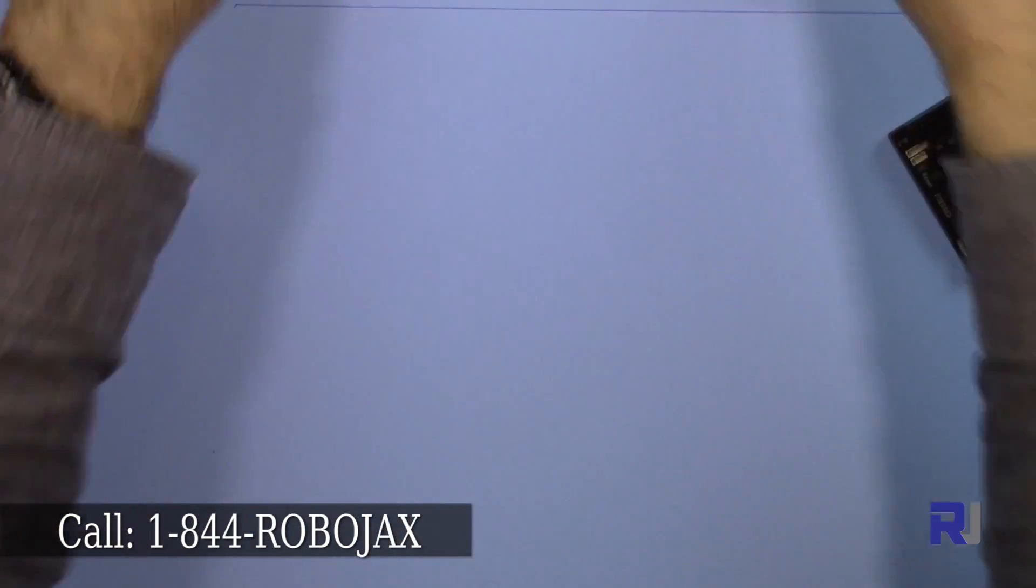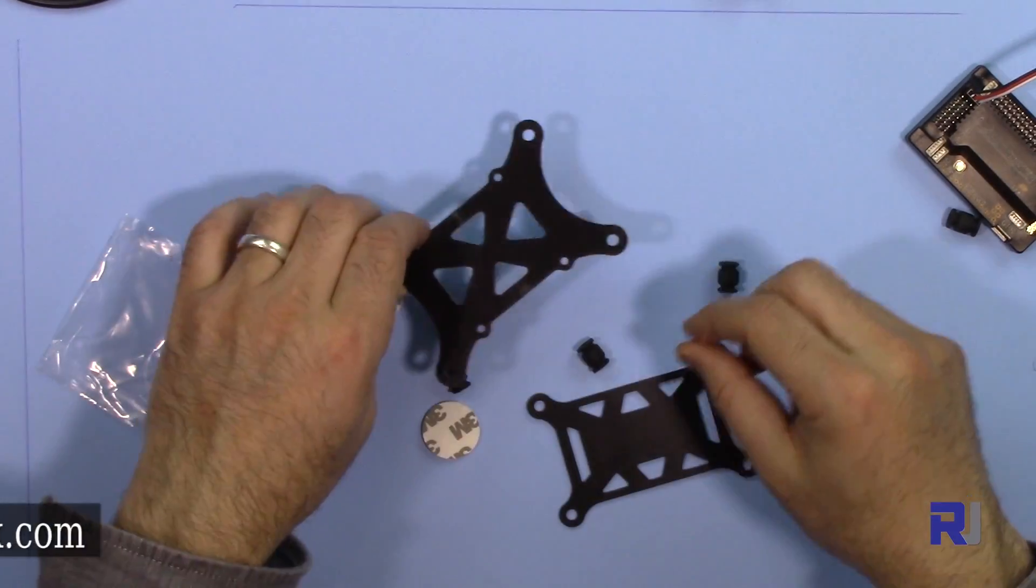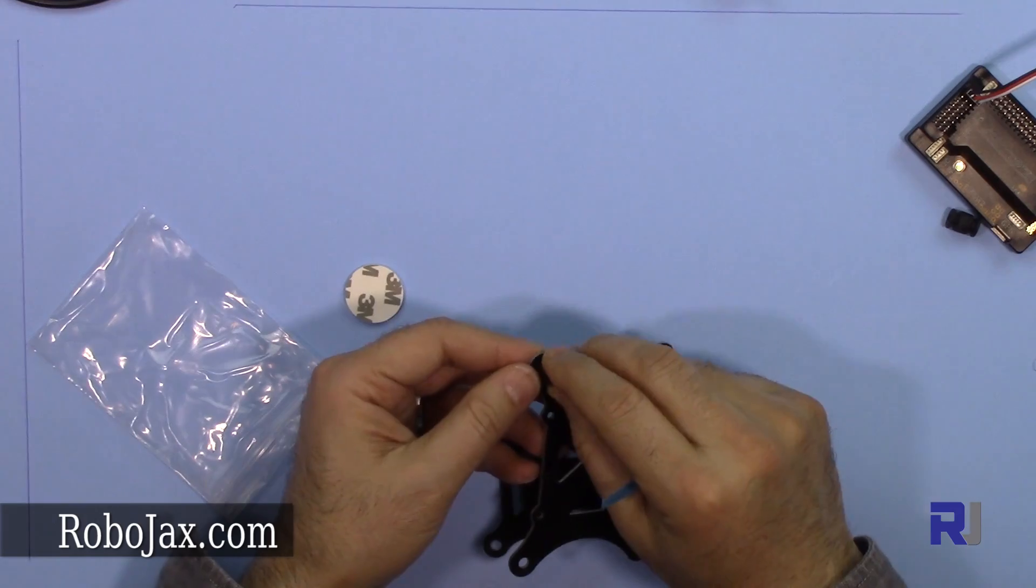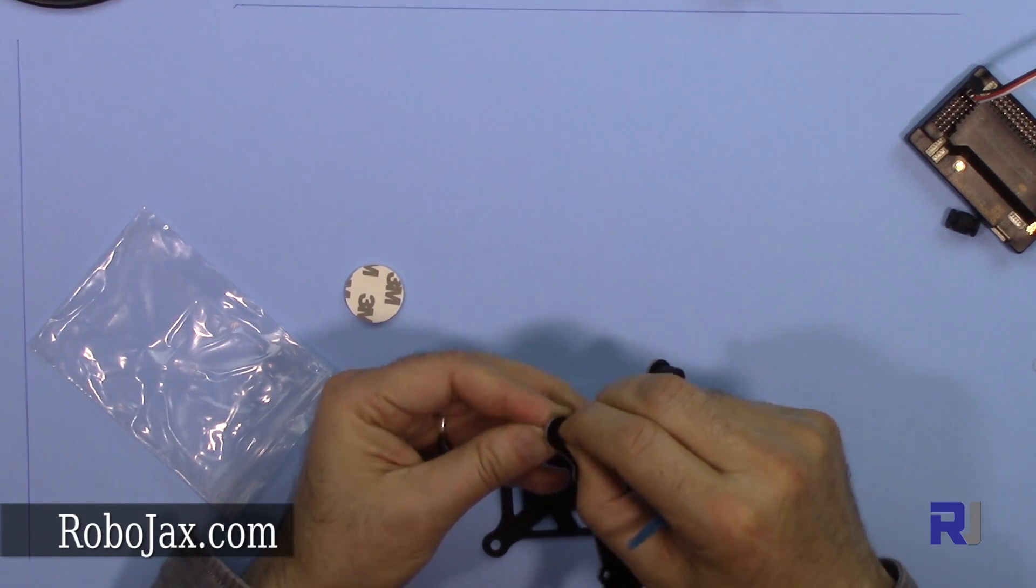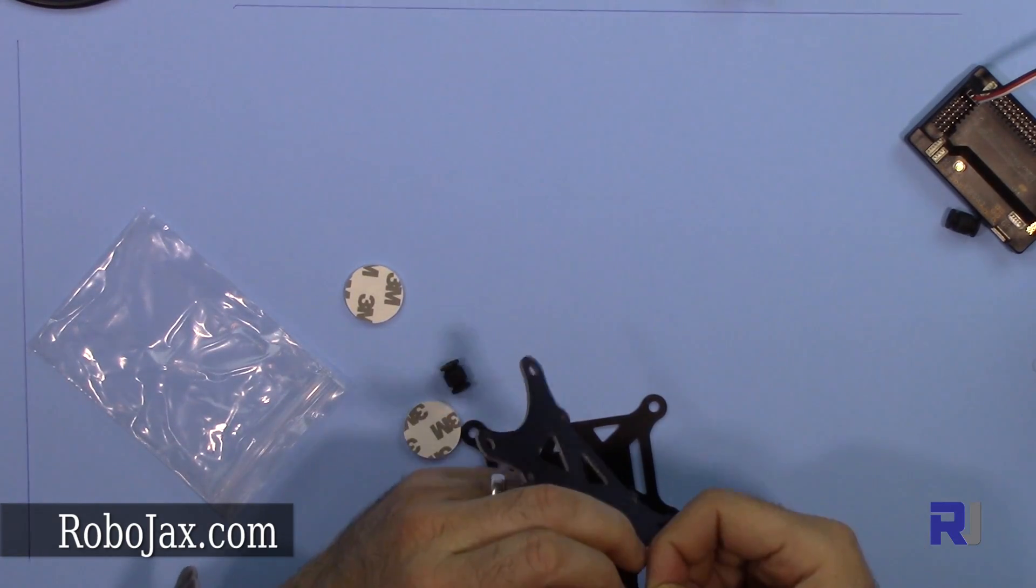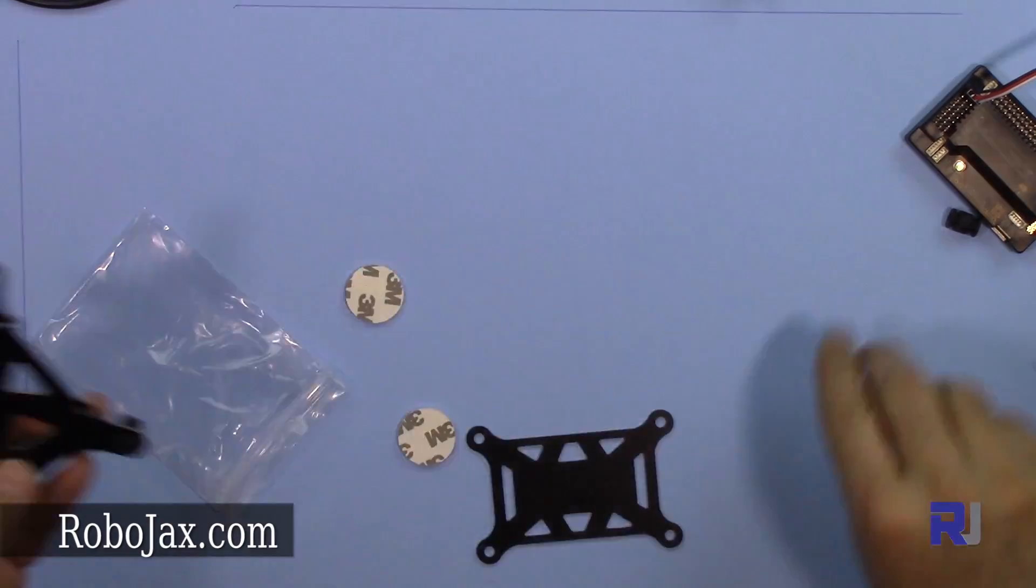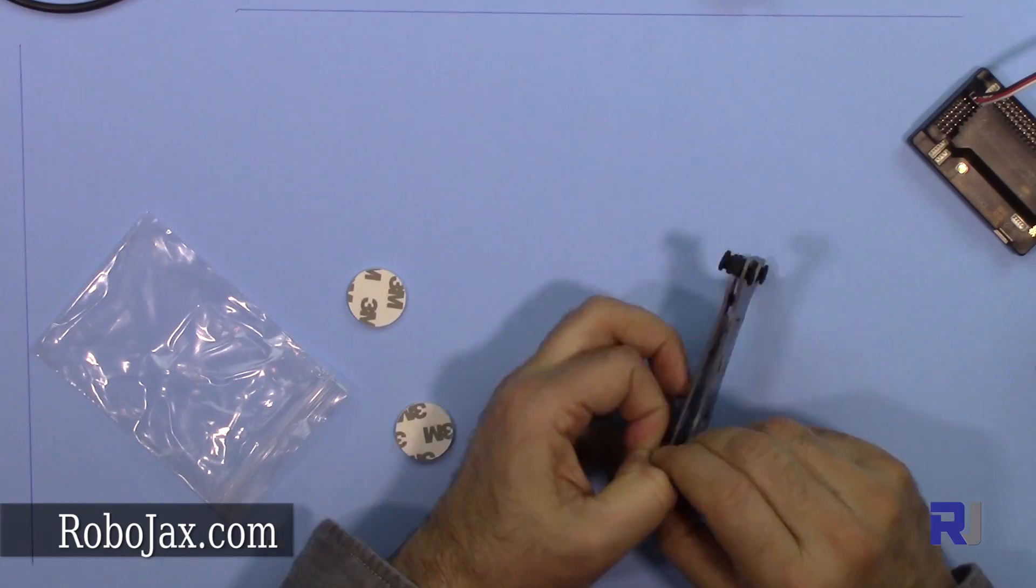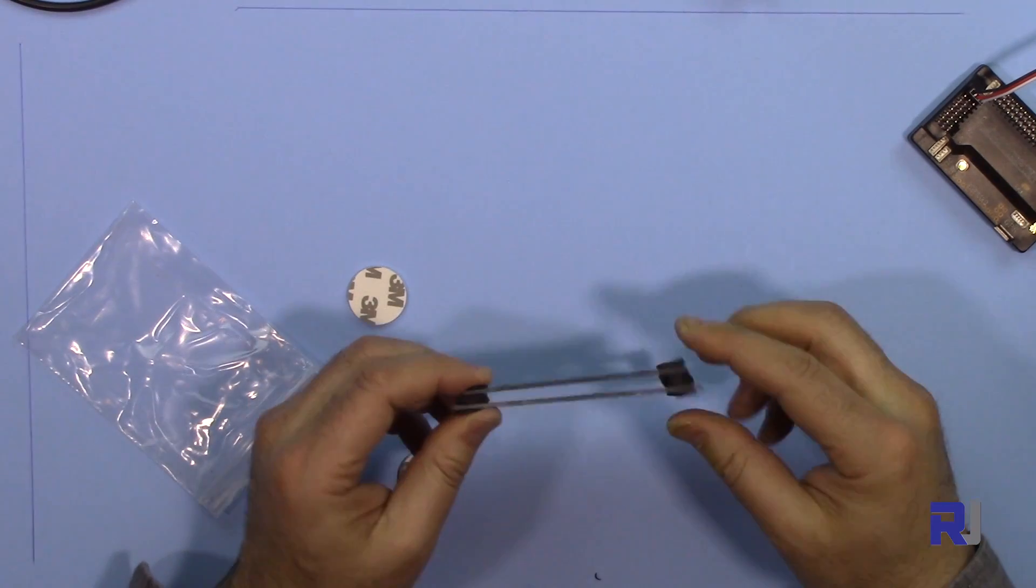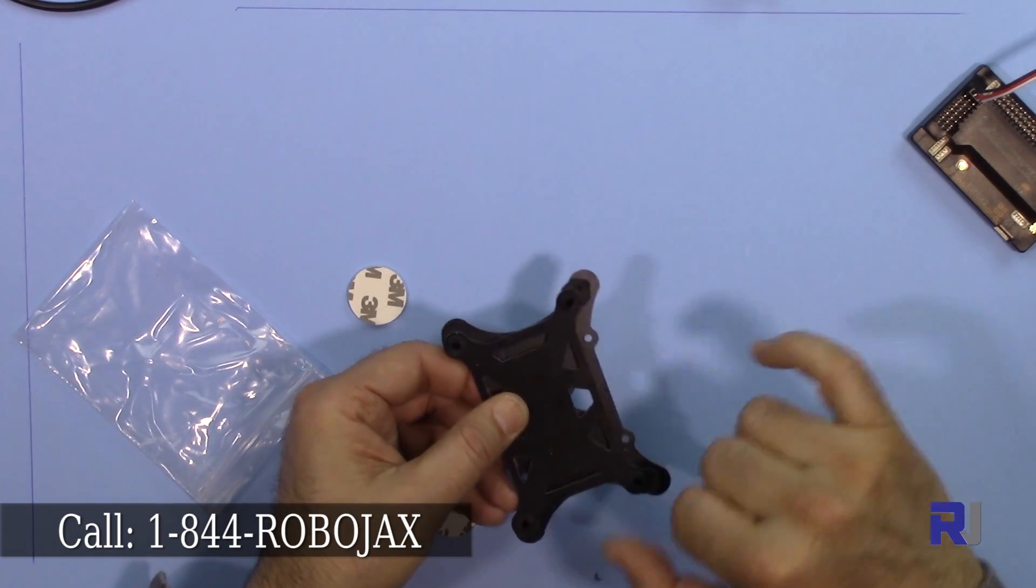This is the shock absorbing kit. This kit will be installed this way. You will insert all these pieces, and the same way the other piece.